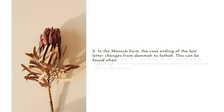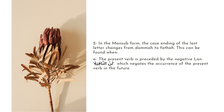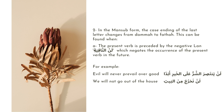The first is when the present verb is preceded by the negative lan, that is, lan annafya. This negates the occurring of the present verb in the future. For example, 'lan yantasirasharru alal khayri abada' — evil will never prevail over good. Yantasirahya is our present verb, it is in the mansub form, carrying a fathah at the end. Another example: 'lan nakhruja min albayit' — we will not go out of the house. Nakhruja here is our present verb, also in the mansub form, carrying a fathah at the end.